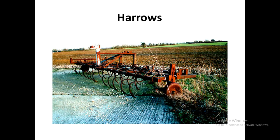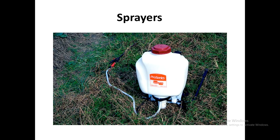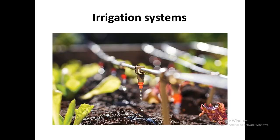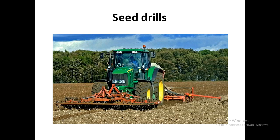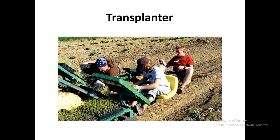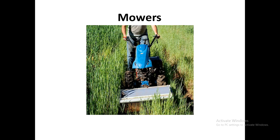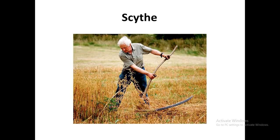Sprayers are used for spraying fertilizers or other chemicals in the field. Here we can see a drip irrigation system installed in the field. Seed drills are used for placing seeds in the field. Transplanters are used for transplanting plants from the nursery seed bed to the main field. Mowers are used for trimming and cutting down grass or pasture. A scythe is a commonly used tool for removing stubbles, hay, or other leftover parts of the plant from the previous season.